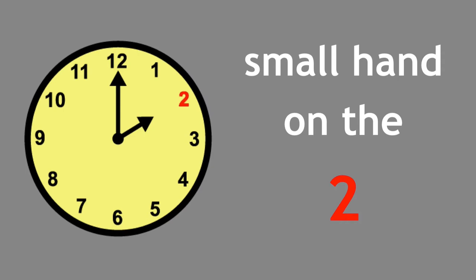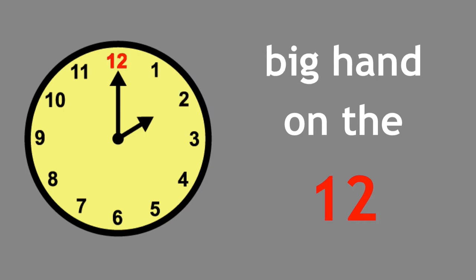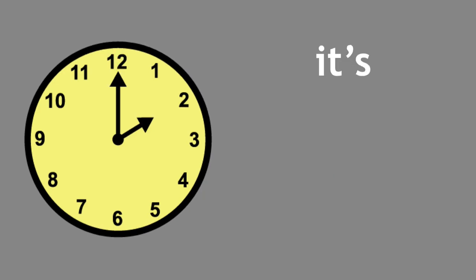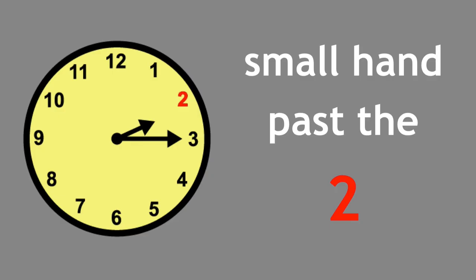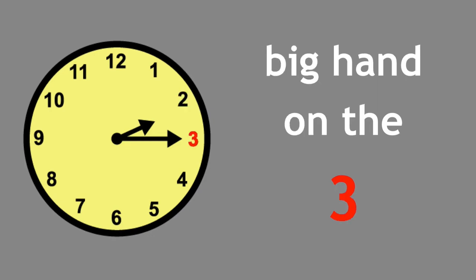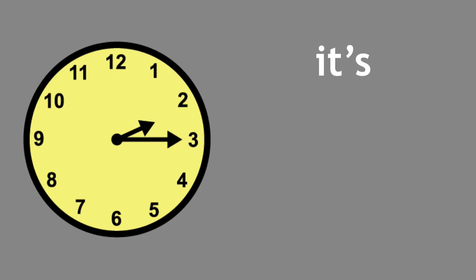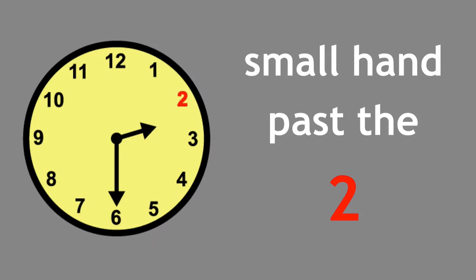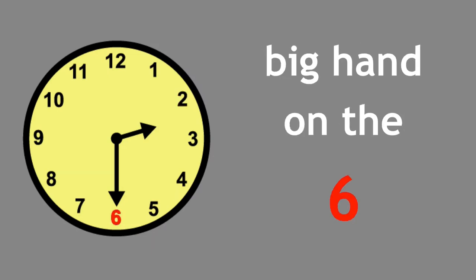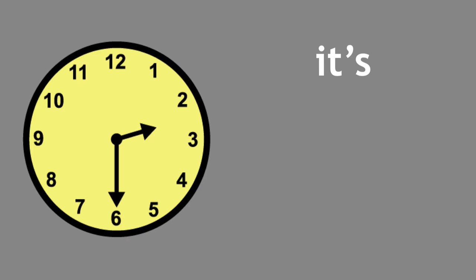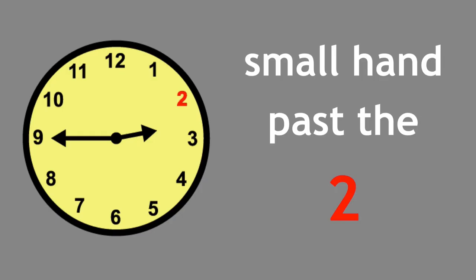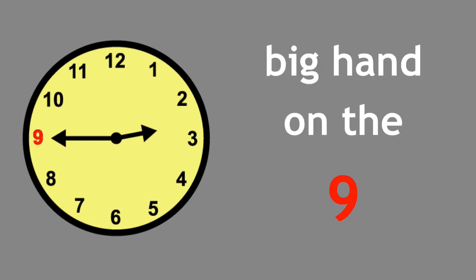Small hand on the two. Big hand on the twelve. It's [pause]. Small hand past the two. Big hand on the three. It's [pause]. Small hand past the two. Big hand on the six. It's [pause]. Small hand past the two. Big hand on the nine. It's [pause].